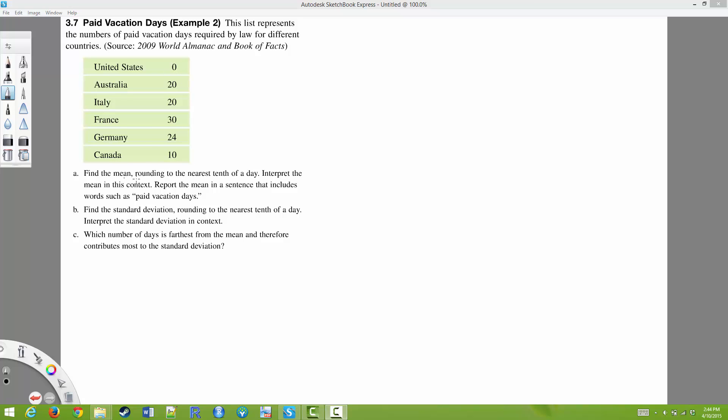Part A asks us to find the mean rounding to the nearest tenth of a day. To find the mean, all we have to do is add up the numbers that we have and divide by the number of variables that we have.